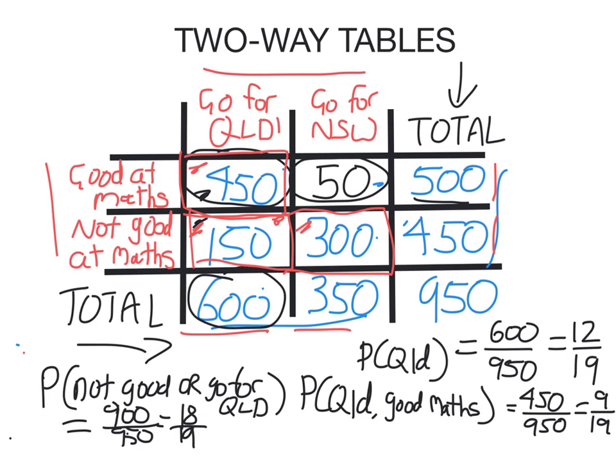Very high — that means the probability that if you selected a student at random from this made-up survey, they are either not good at maths or go for Queensland, is 18 over 19. So it's very, very likely you'll pick one of those students. Hope you've enjoyed this video. This has been the luckiest maths teacher in the world. Have a great day.